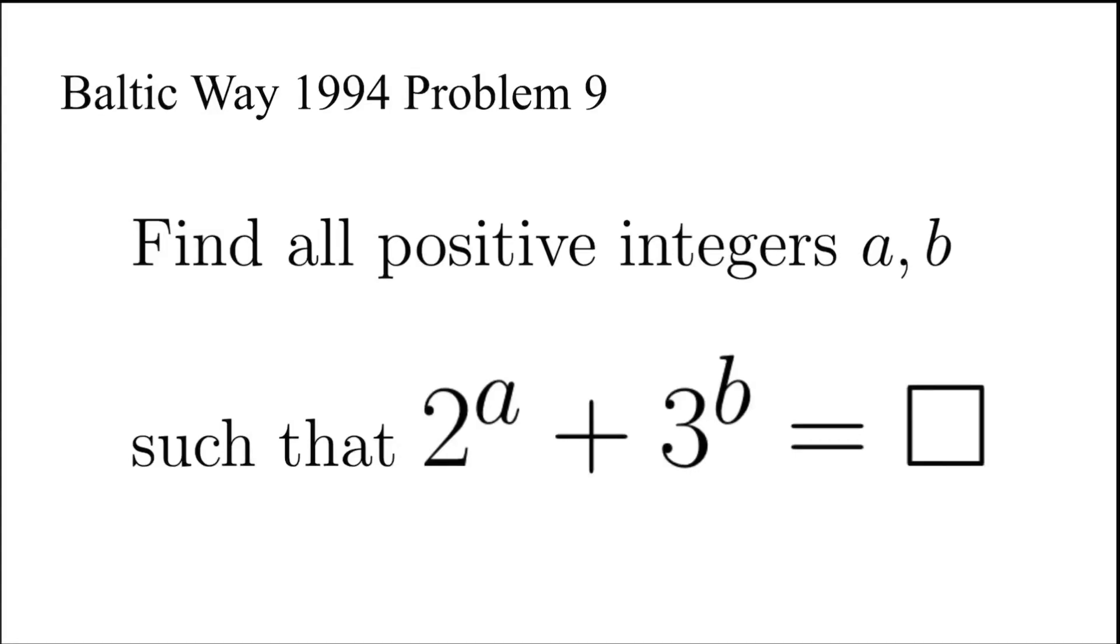In this video, we are going to find all positive integers a and b such that 2 to the power of a plus 3 to the power of b is a perfect square. This is a problem from Baltic Way 1994.